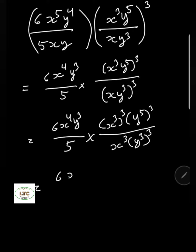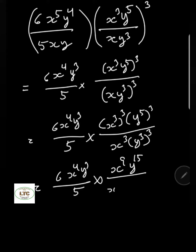By the power of a power rule: x to the power of 3 becomes x to the power of 9, and y to the power of 5 to the power of 3 is y to the power of 15. And y to the power of 3 to the power of 3 is y to the power of 9. Now multiply all — multiply numerator and denominator.